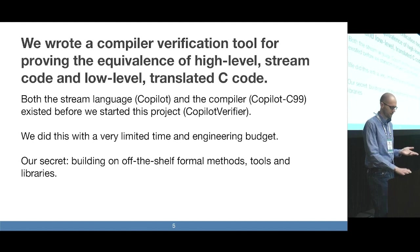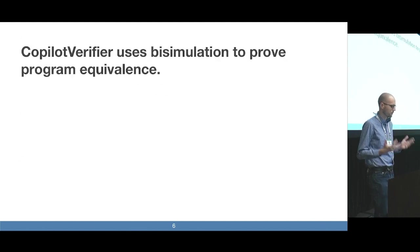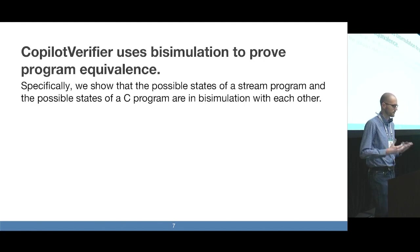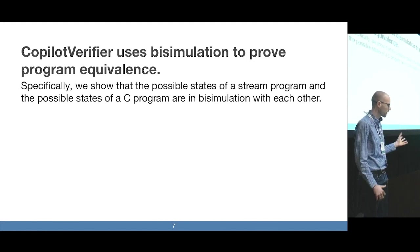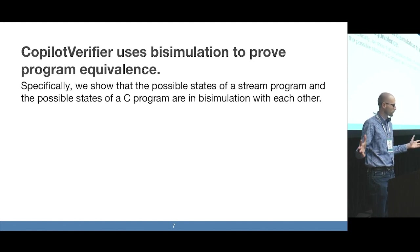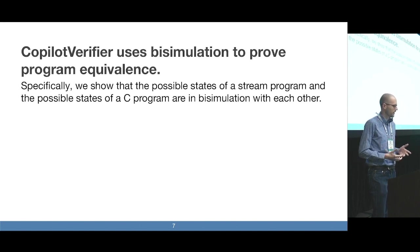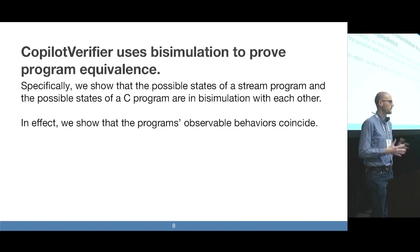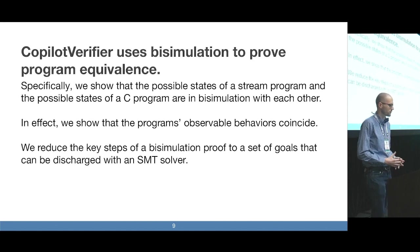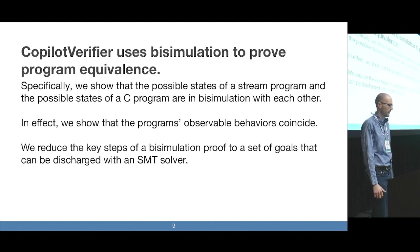So what is new in this talk? Copilot Verifier proves program equivalence and does so using a bi-simulation-based technique. When I say bi-simulation here, I mean that we take the stream program as well as the C program that it compiles into, represent the states of each program as a state machine, and prove that they're in bi-simulation with each other. That just means that the observable behavior of both types of programs coincide. What's nice is that it's almost completely automatic — it discharges a lot of the heavy lifting to SMT solvers under the hood.